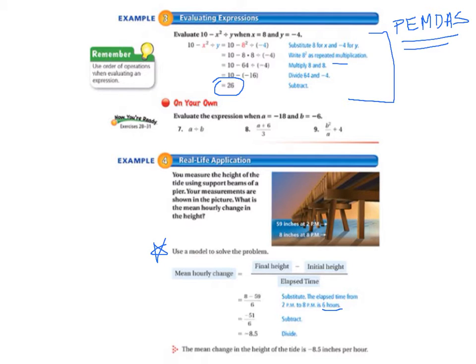And then, it started out at 59 inches. So, that's what we put in for the initial height. And then, it ended up at 8 inches. So, that's what we put in for the final height.